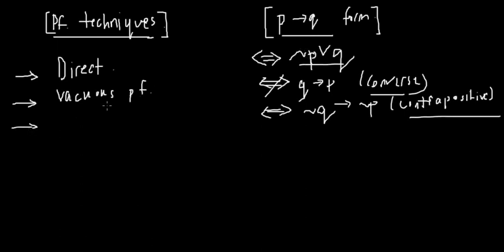And I'll explain these more as I do examples soon. The next type is a trivial proof. Similar logic as the vacuous proof, we know that not P or Q is the same as P implies Q. So for this statement to be true, we can look at this side now, Q. If Q is true, if the conclusion is true, then it doesn't matter what the hypothesis is saying because the statement will be true.